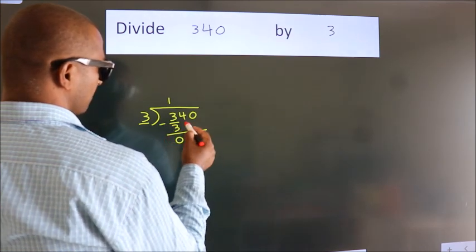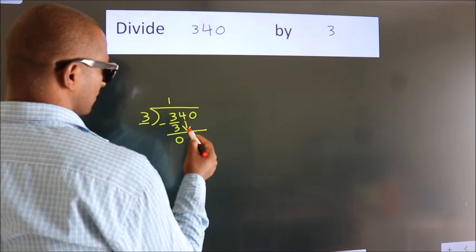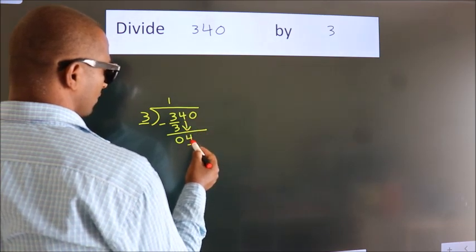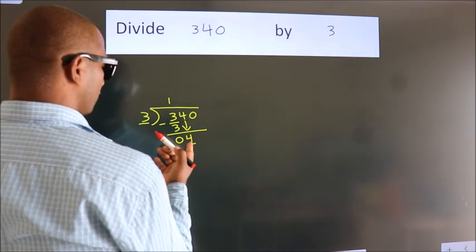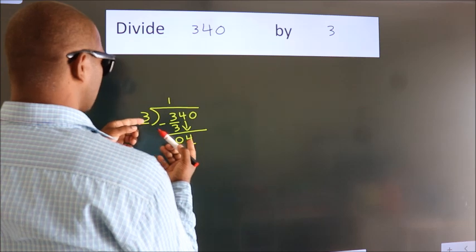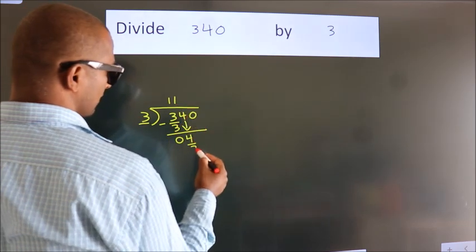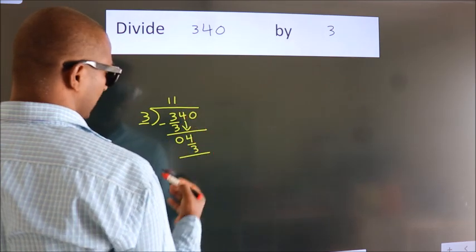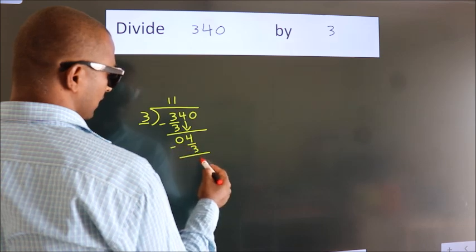After this, bring down the beside number. So 4 down. So 4. A number close to 4 in the 3 table is 3 once, 3. Now we subtract. We get 1.